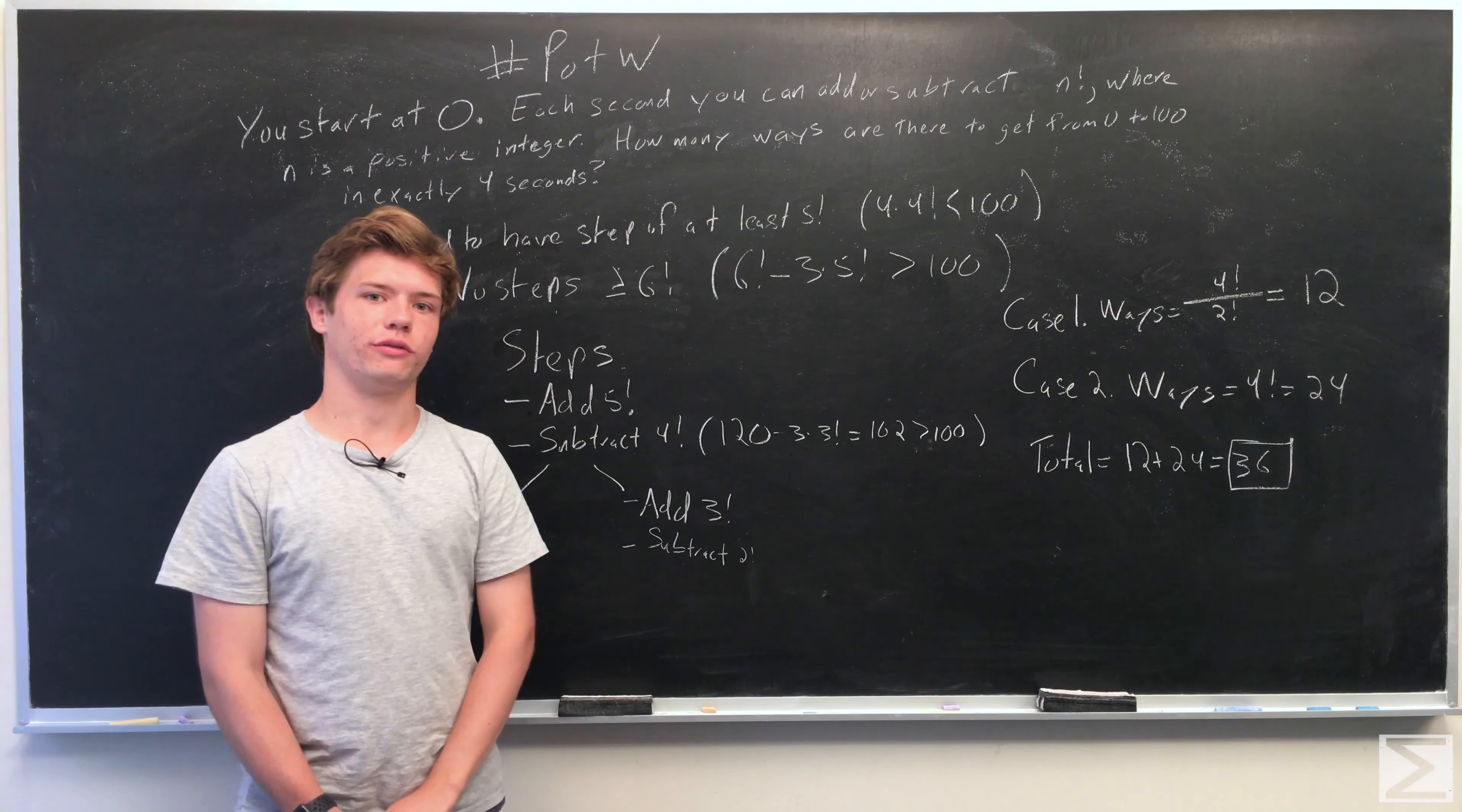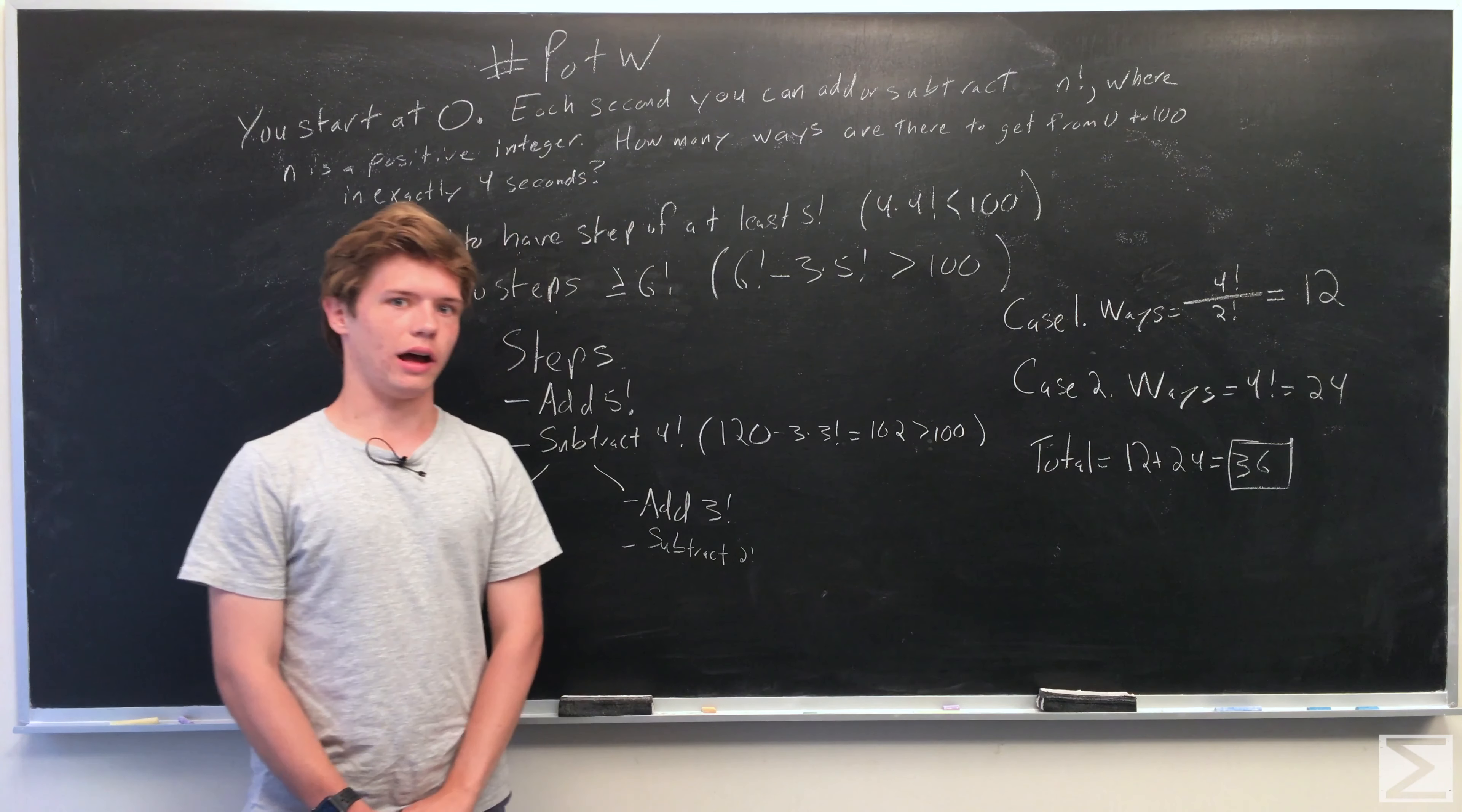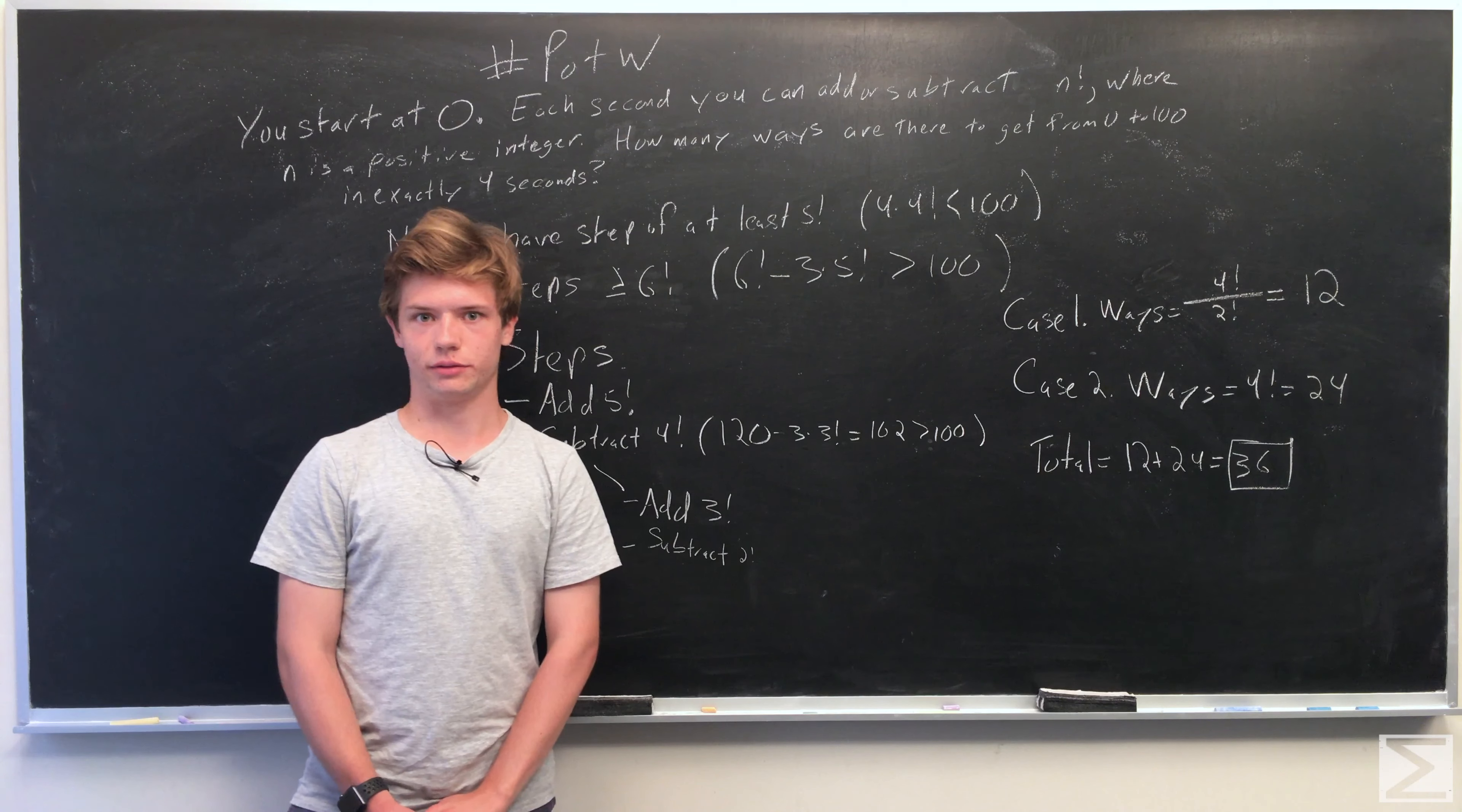So two steps are adding 5 factorial and subtracting 4 factorial. We will be left with 96, so we need to have 2 steps that either have a difference of or a sum of 4.